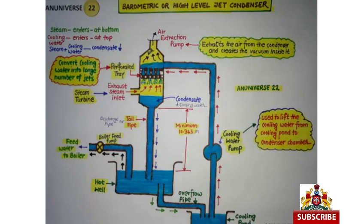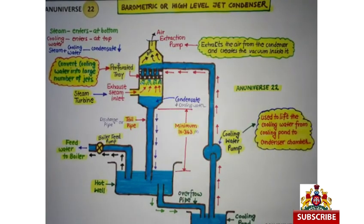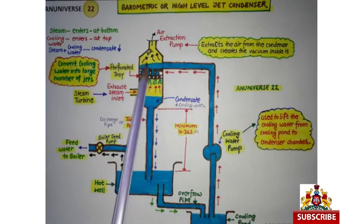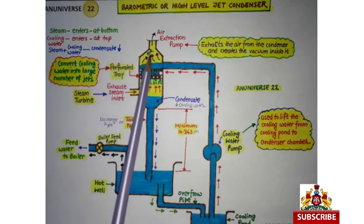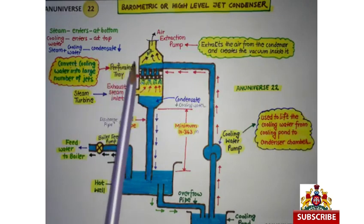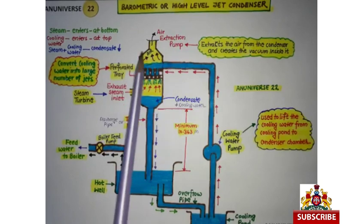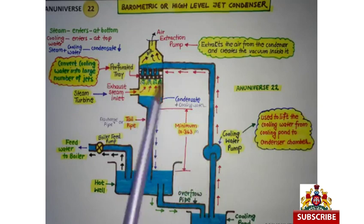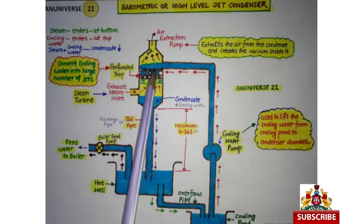यहाँ पर जो Air Extraction Pump लगा है, इसका काम होता है Condenser Chamber से Air और Uncondensed Steam को discharge करना। इससे कुछ Vacuum भी create होता है। Air Extraction Pump Small Size और Small Capacity का होता है। इसकी वजह से जो Vacuum create होता है और Cooling Water Pump दोनों की मदद से Cooling Pond से Cooling Water को lift किया जाता है और उसको Perforated Tray में भेजा जाता है।